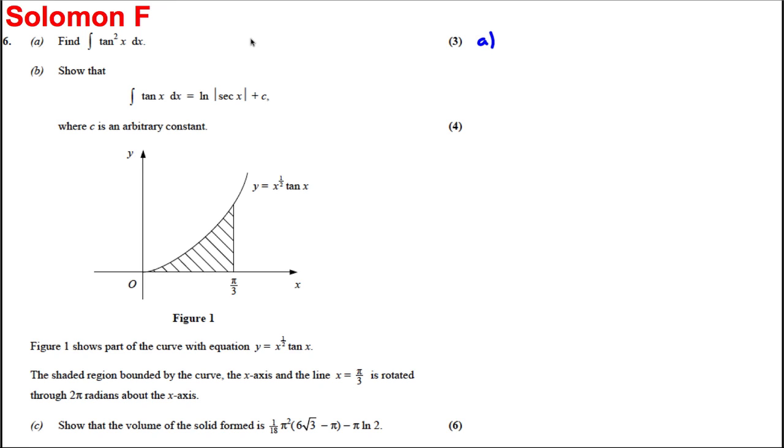What you can do is you should know that one plus tan squared x by a trig identity is equal to sec squared x. So I can write the integral of tan squared x, therefore, with respect to x, as actually the integral of sec squared x, subtract one with respect to x. Now, the integral of sec squared is in the formula booklet. It's tan x. And the integral of one is x. So this is subtract x plus c.